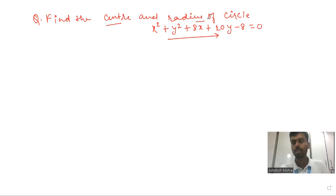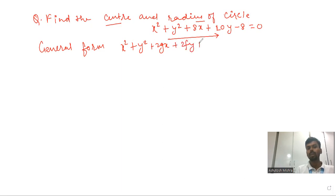How to find the center and radius of the circle when the question is given in general form? What is the general form of equation, students? We have x² + y² + 2gx + 2fy + c = 0.